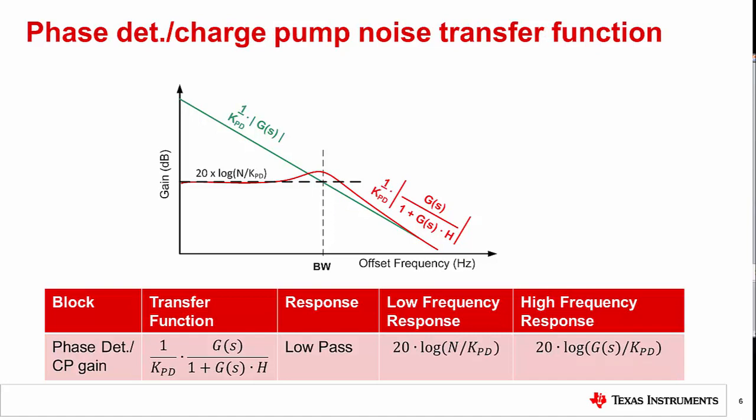For the phase detector, note the factor of 1 over KPD. This implies that doubling the charge pump current can theoretically yield a 6 dB improvement. However, this does not account for the fact that the charge pump noise itself increases as the gain is increased. In practice, there can often be a benefit, but not the full 6 dB. Depending upon the specific PLL device characteristics, there can be a point of diminishing returns where increasing the charge pump current provides less phase noise improvement. For example, when increasing the charge pump current from 1600 to 3200 microamps, you may not always get the same relative benefit as an increase in gain from 100 to 200 microamps.